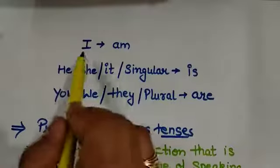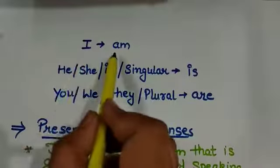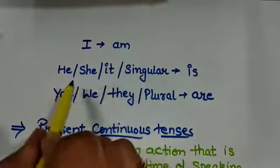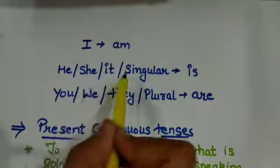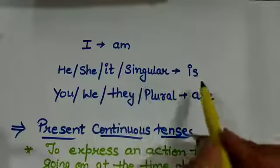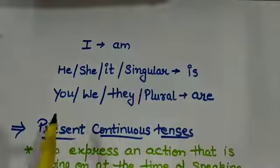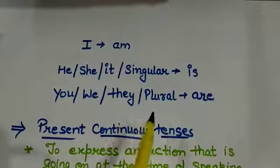When we have I as a subject, we use am with it. When we have he, she, it and singulars, we use is with the subjects. And if we have you, we, they and plural, we use are.